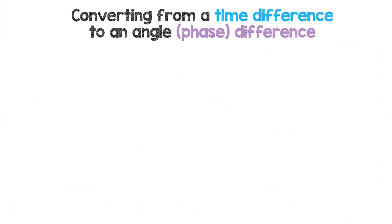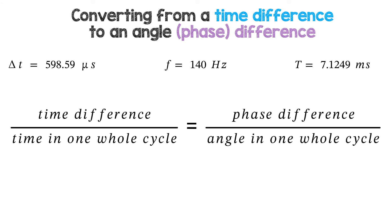Converting from a time difference to an angle or phase difference, we have the time difference around 600 microseconds and the frequency of our supply is 140 hertz, so 1 over 140 is just over 7 milliseconds. The time difference between the voltages compared to the time in a whole cycle is the same ratio as the phase difference between them compared to the angle in a whole cycle.